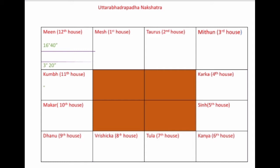The sign of Meen or Pisces is ruled by Jupiter or Guru, and Meen Rashi is a watery sign. This water represents the spiritual depths.